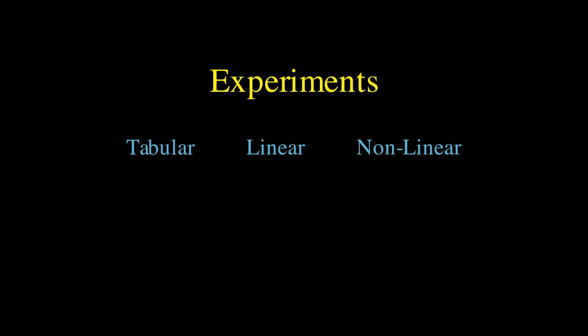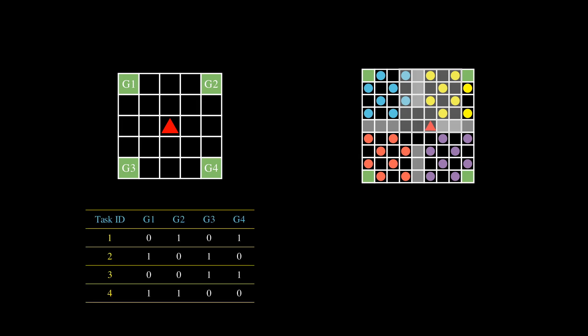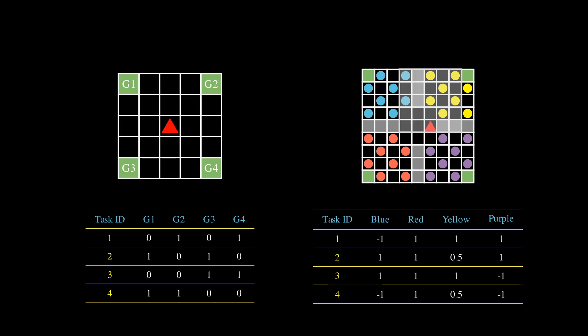Empirically, we tested our approach on both prediction and control problems with various function approximators. For the prediction problem, we consider a discrete grid for the tabular experiment and mini-grid for the deep RL experiment. We change the rewards of the goal state from one task to another, so the agent has to adapt its estimates continually. We test our approach, PT-TD learning, against reset and non-reset variants of TD learning.